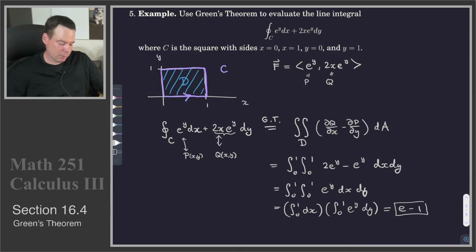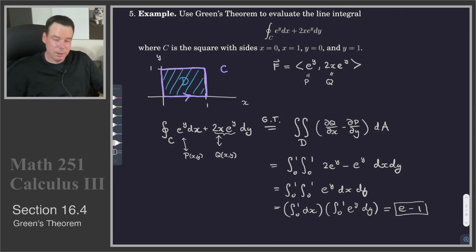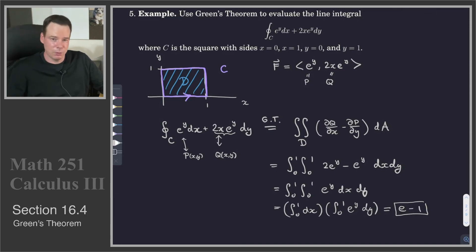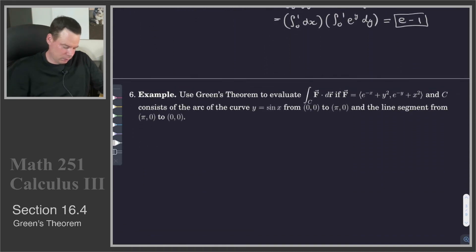So that was an example of how we can use Green's Theorem. I've got a line integral I want to compute. Rather than finding a parametrization for the curve C, or multiple parametrizations, I instead integrate over the whole region D and convert it to a double integral problem — the kind we saw back in chapter 15.